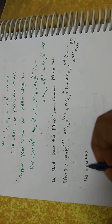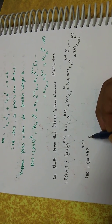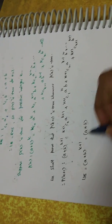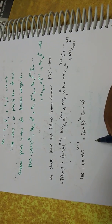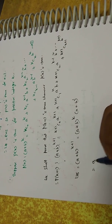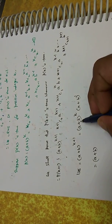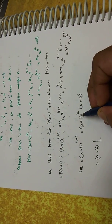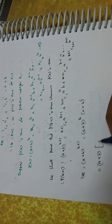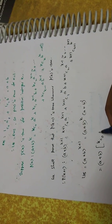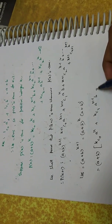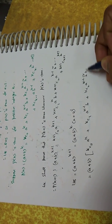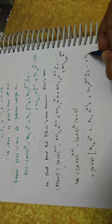LHS is (a + b)^(k+1), which can be written as (a + b)^k * (a + b). Substituting the value of (a + b)^k from equation 1: kC0 * a^k + kC1 * a^(k-1) * b + kC2 * a^(k-2) * b^2 + ... + kCk * b^k, multiplied by (a + b).